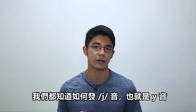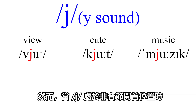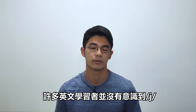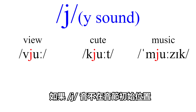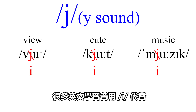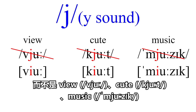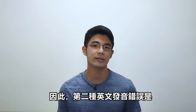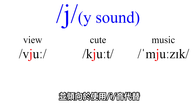Now to the second one. We all know how to pronounce the yes sound, aka the Y sound, as in yes, yawn, and unicorn. However, when the yes sound is in a non-syllable initial position, many English learners aren't aware of it. Due to the fact that the way of pronouncing the yes sound is actually very close to pronouncing the ee sound, aka the long ee sound, many English learners use the ee sound instead. For example, in view, cute, and music, they may pronounce something like view, cute, and music, instead of view, cute, and music. So, the second type of English pronunciation mistake is that people aren't aware of the yes sound in non-syllable initial positions and tend to use the ee sound instead.